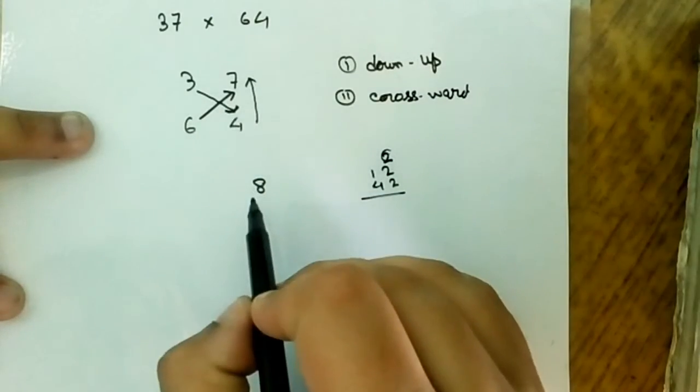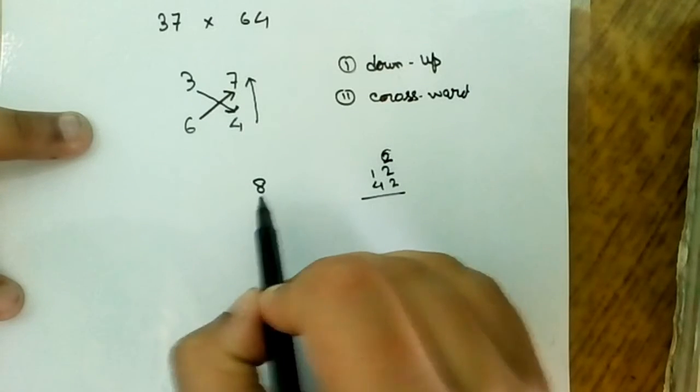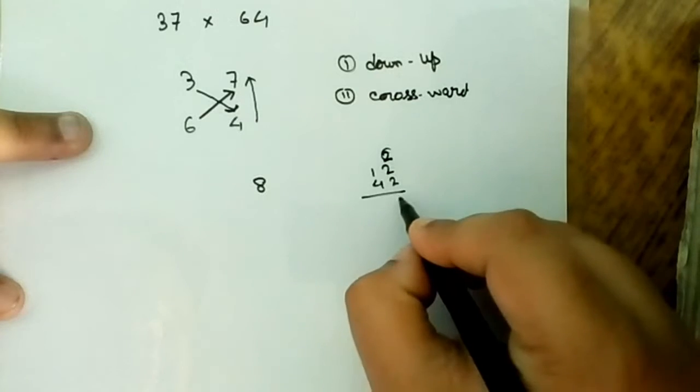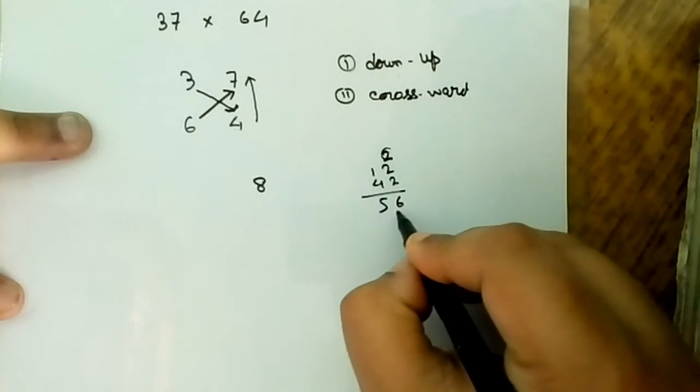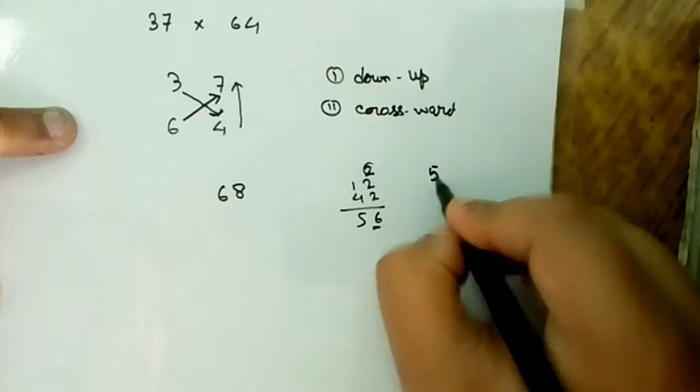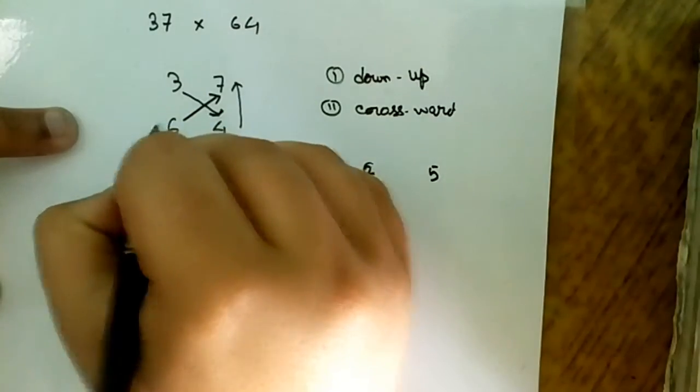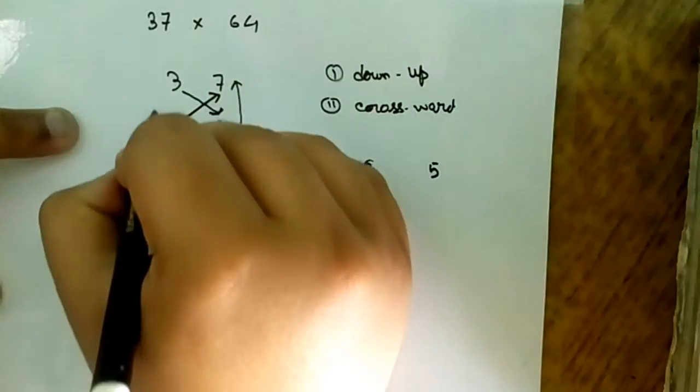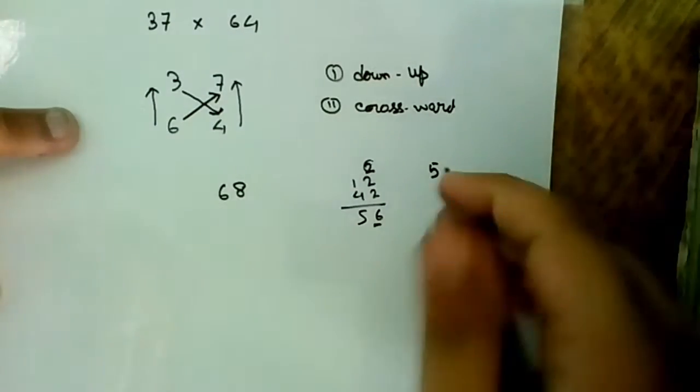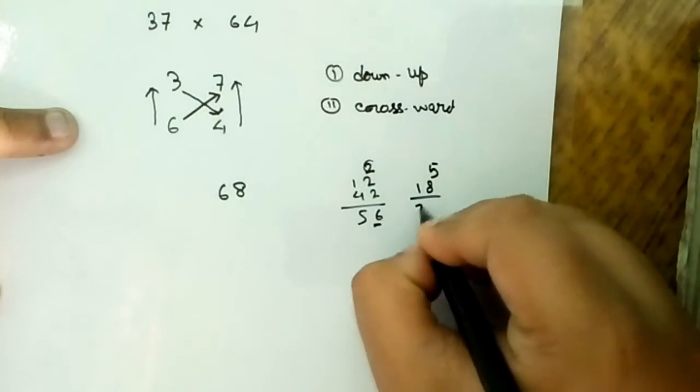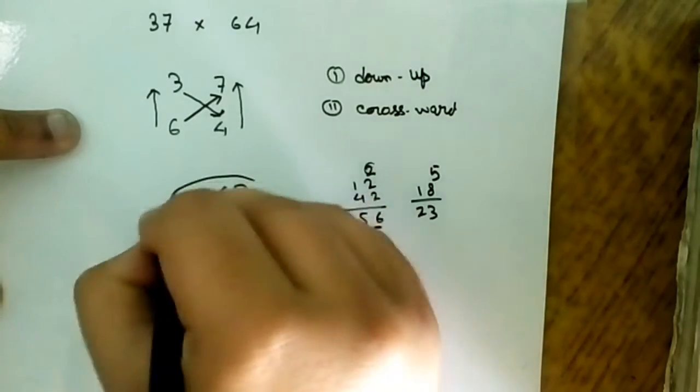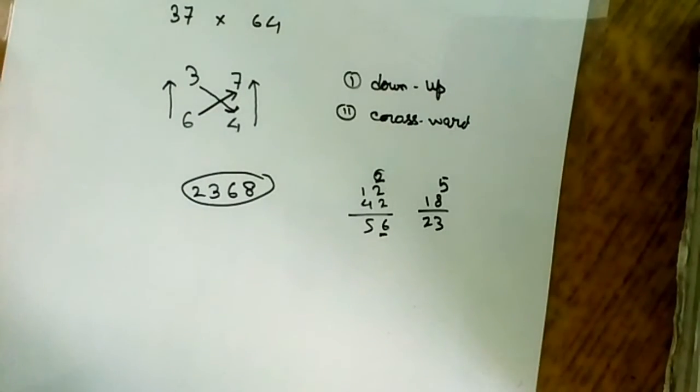If I add these three numbers, 2 is the carry. 2 plus 12 plus 42 equals 56. I will write 6 here and 5 will be the carry. Now again down to up: 6 into 3 equals 18, 18 plus 5 equals 23. You have to write 23. This is the required answer.